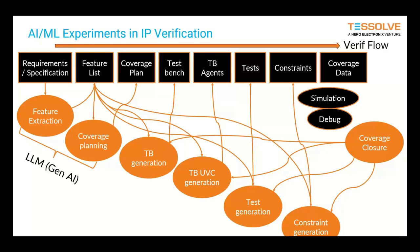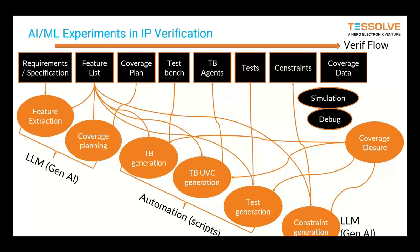At the beginning — in feature extraction and coverage planning — we've been using large language models and generative AI to see how much of that we can automate. For test bench generation, UVC generation, and test generation, we're mainly using automation scripts. We think it's a bit of a stretch for current large language models to generate good UVM code, so we're building automation scripts for that, though we may apply more AI there in the future.